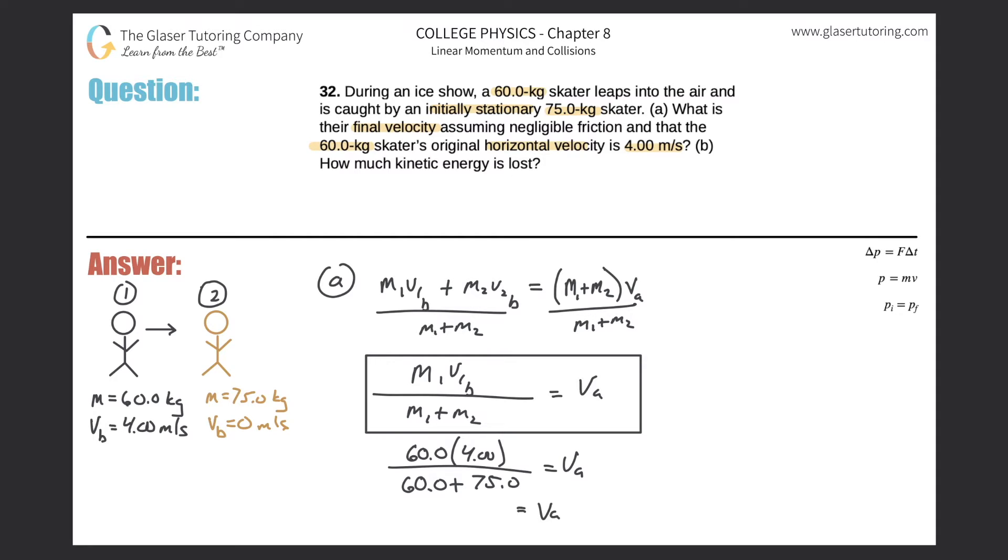So let's do the math. So basically it's 60 times 4, divided by 60 plus 75. And we get a value of about 1.78, considering rounding. 1.78, and that is now meters per second. And that is the velocity of the system after the collision. Okay, so that takes care of letter A.